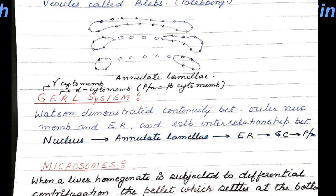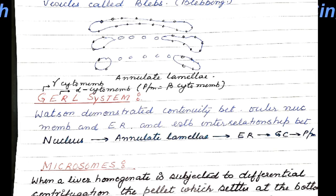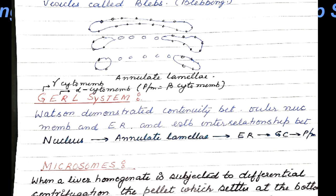Scientist Watson demonstrated continuity between the outer nuclear membrane and endoplasmic reticulum, establishing an interrelationship between these membranes. He said that from the nucleus, annulate lamella arises, then from annulate lamella endoplasmic reticulum is formed. From blebs of ER, the Golgi complex gets constituted, and then from Golgi complex the membrane flows to the plasma membrane. This is termed membrane flow or the GIRL system.